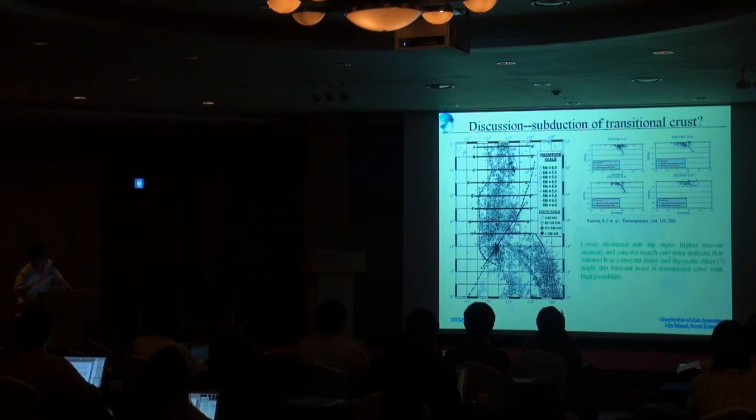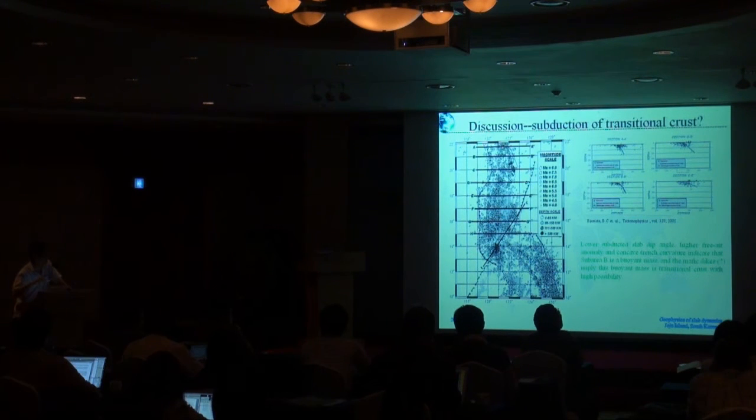As to the neutral buoyancy, we can find evidence from the gravity because at this area we can find higher free-air anomaly, and also evidence from the slab angle. From north to south, this is the location of profiles A, B, D, E. The slab angle is more flat, so it implies that the subduction slab is more buoyant.